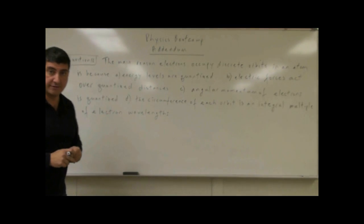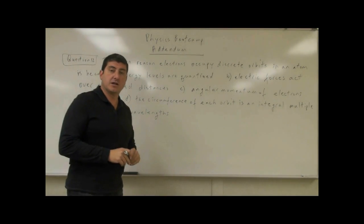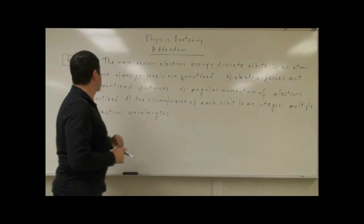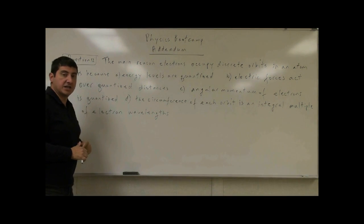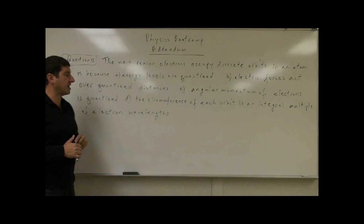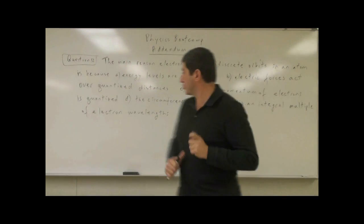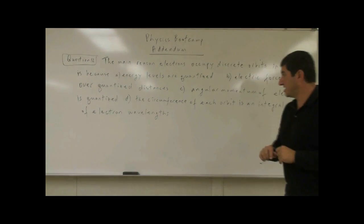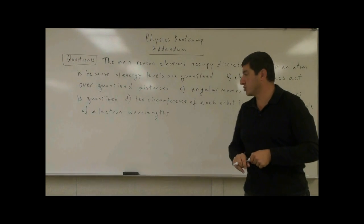We are now going to do question 12 of the addendum, going through the topics of modern physics. Question 12 says: the main reason electrons occupy discrete orbits in an atom is because A) energy levels are quantized, B) electric forces act over quantized distances, C) angular momentum of electrons is quantized, D) the circumference of each orbit is an integral multiple of electron wavelengths.